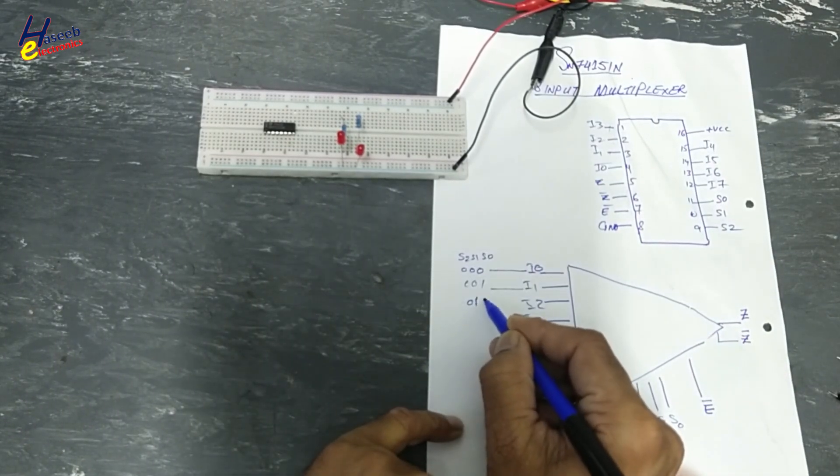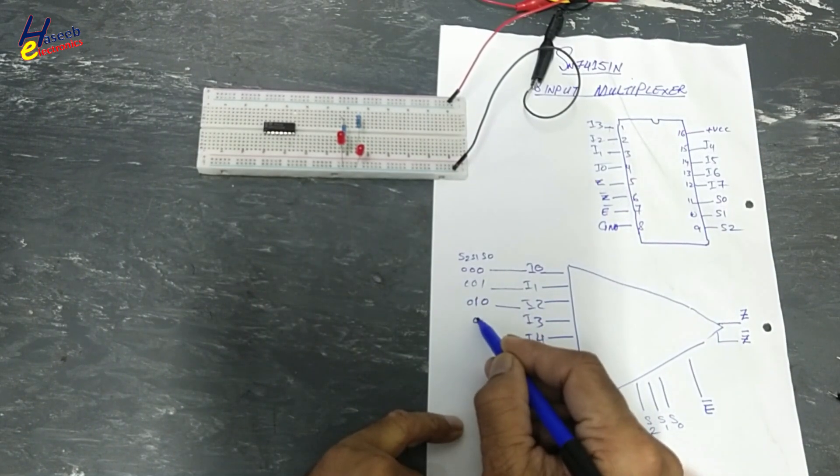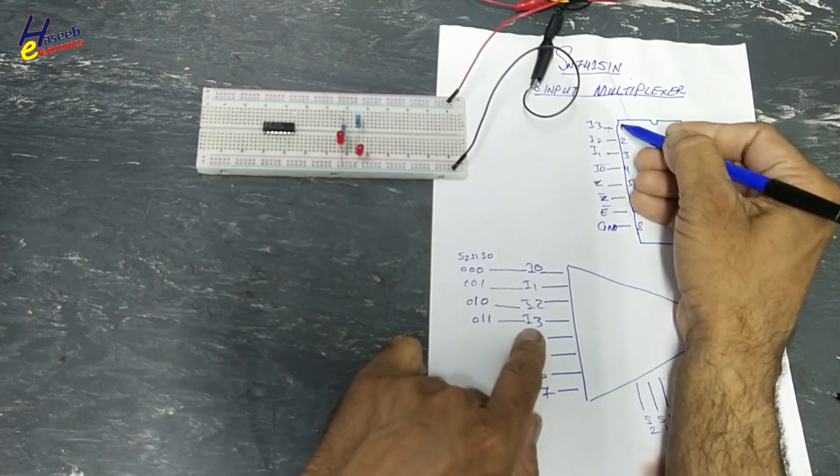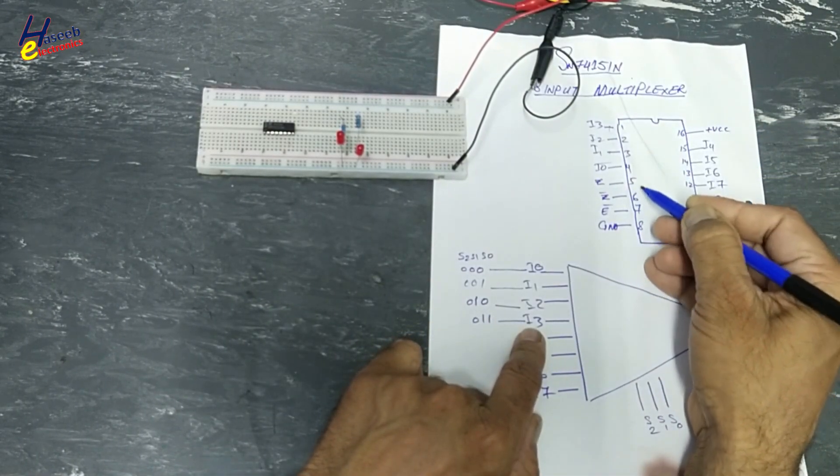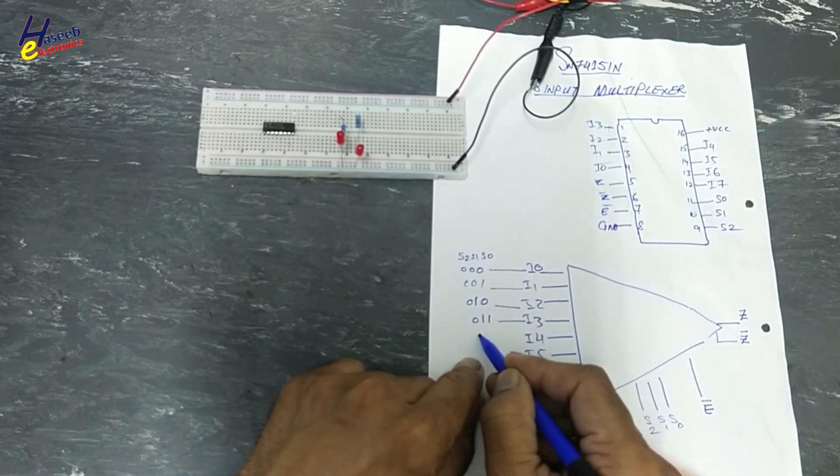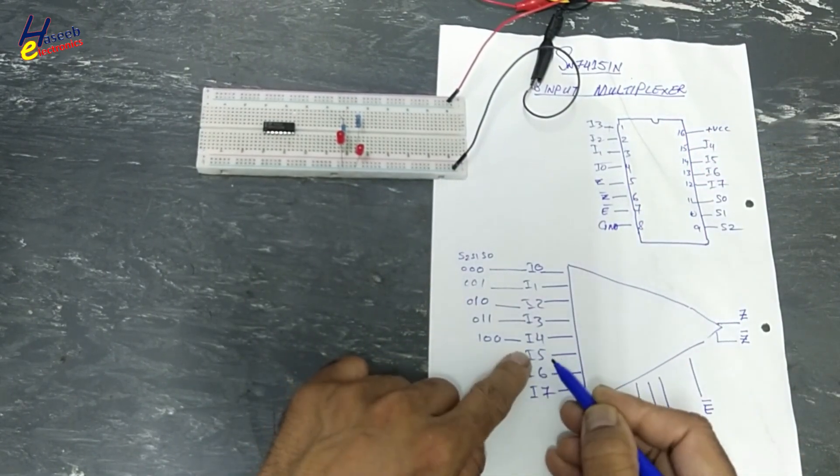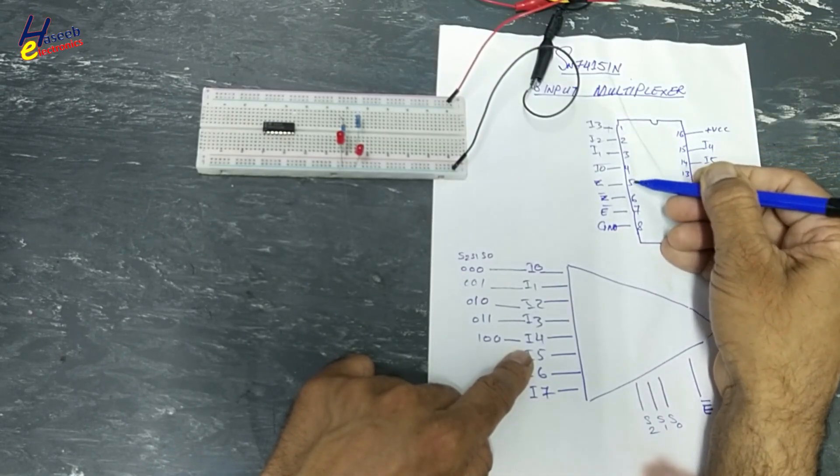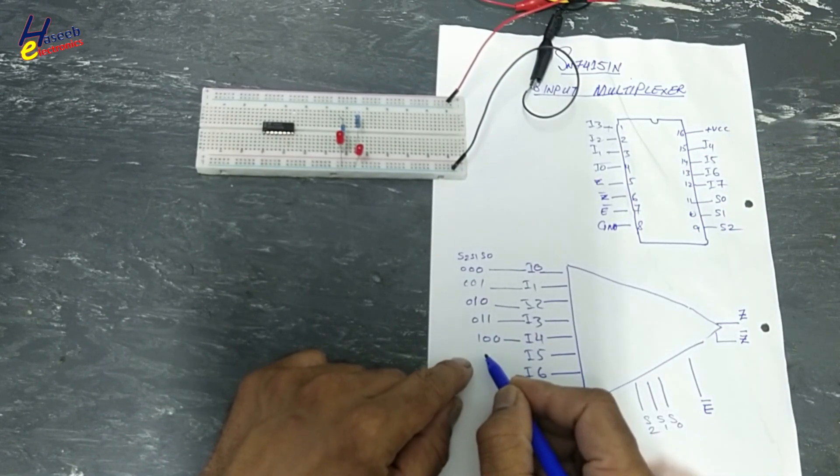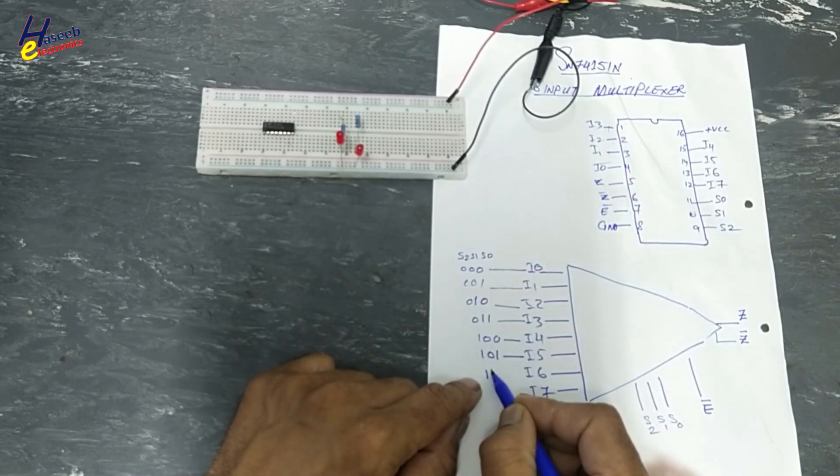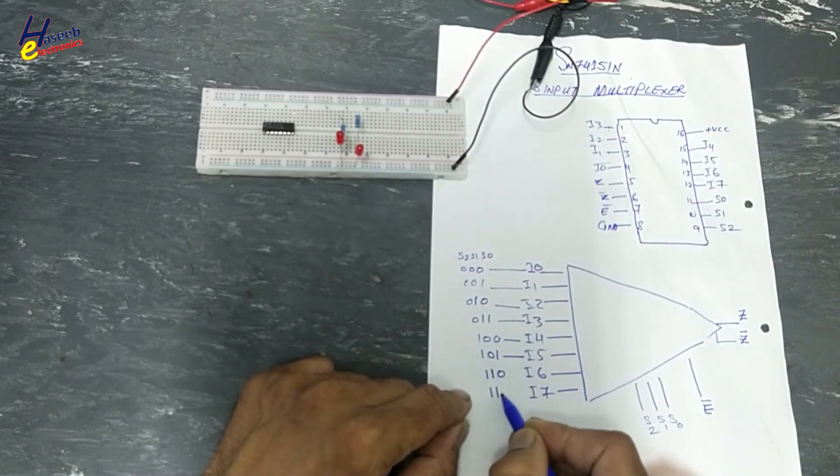Zero, one, zero. Zero, one, one. One, zero, zero. I four. That is this pin will be routed to pin number five. One, zero, one. One, one, zero. One, one, one.